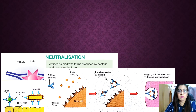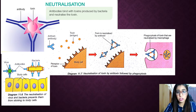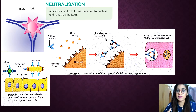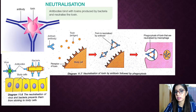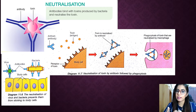Neutralization is when an antibody binds to an antigen of a pathogen, for example a virus or bacteria, to prevent the pathogen from binding to body cells. The antitoxin of the antibody can also neutralize toxins released by pathogens by binding to them and preventing the toxin from entering body cells.